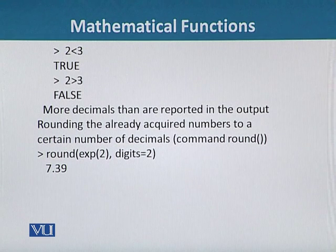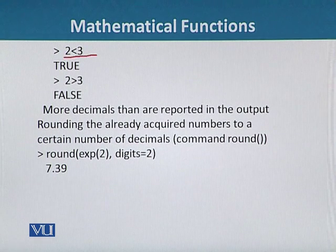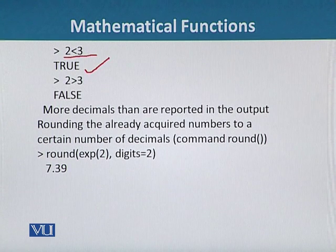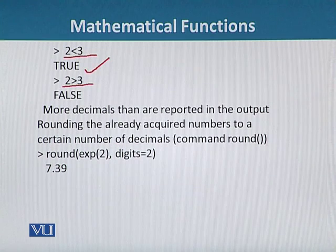For example, we can use 2 < 3, so this is true and we will get the answer TRUE. But if we use 2 > 3, then obviously this is false and we will get the answer FALSE.